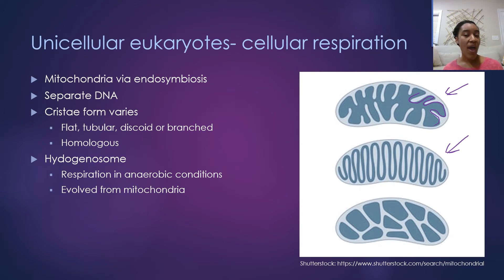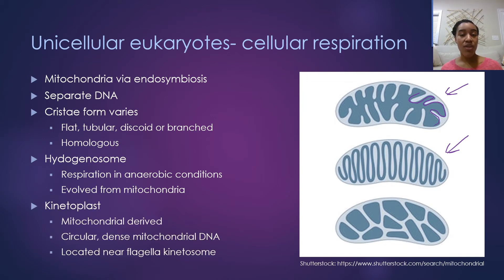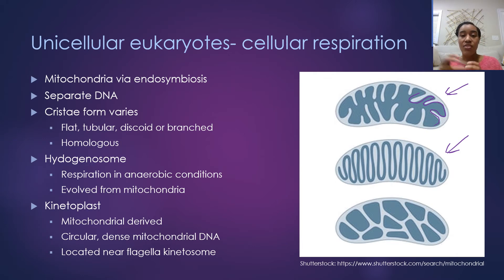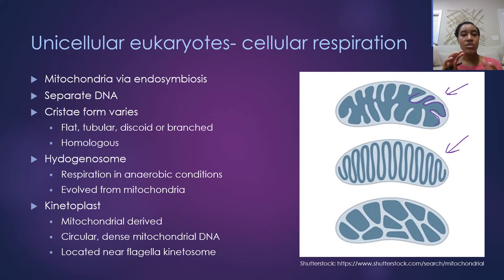Some protozoans don't have mitochondria and instead use a hydrogenosome, which allows cellular respiration in the absence of oxygen under anaerobic conditions — hypothesized to have evolved from a mitochondria. Another mitochondria-derived organelle is the kinetoplast, found in some protozoans as a dense circular region of mitochondrial DNA located near the kinetosome of the flagella. Trypanosomes are one example, and this organelle is used when identifying different phyla of protozoans.